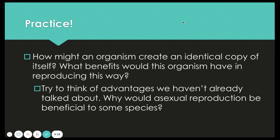So how might an organism create an identical copy of itself? What benefits would you say the organism would have to reproduce this way? Try to think about advantages we haven't already talked about — why would asexual reproduction be beneficial to some species? We've talked about in ecology why sometimes you need more members of a population, or why it might be worth spending more time reproducing. Think about ways in which it connects back to topics like that.